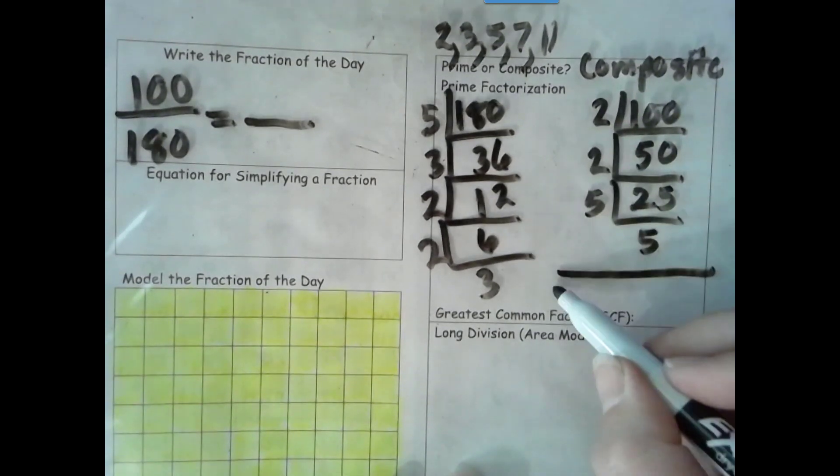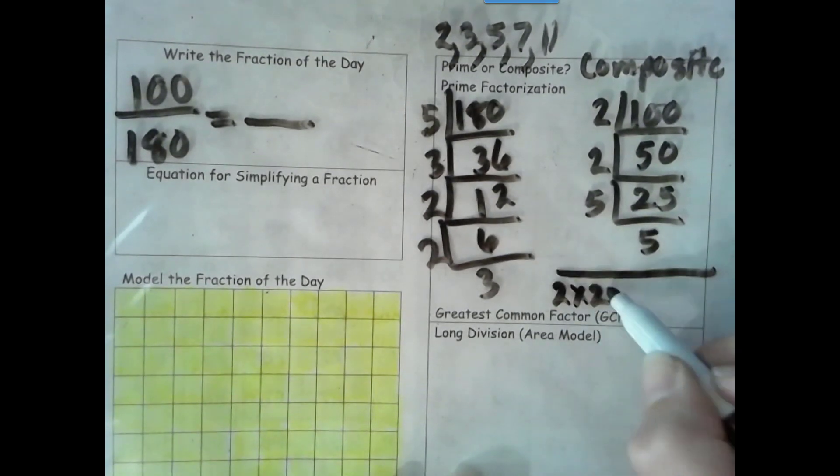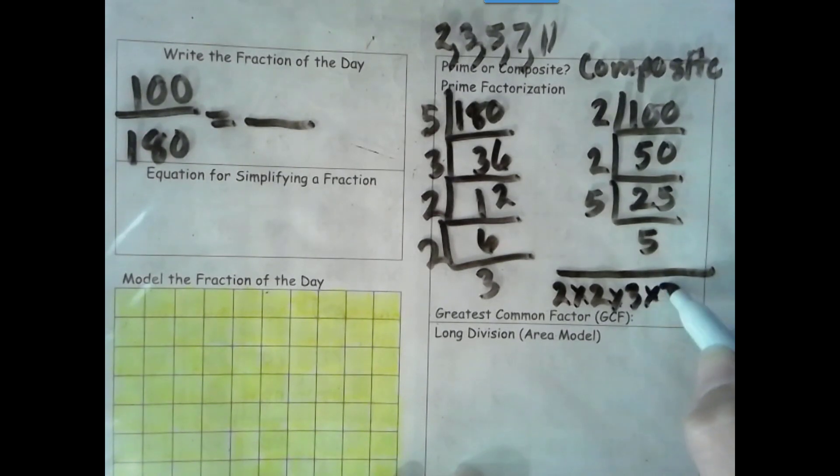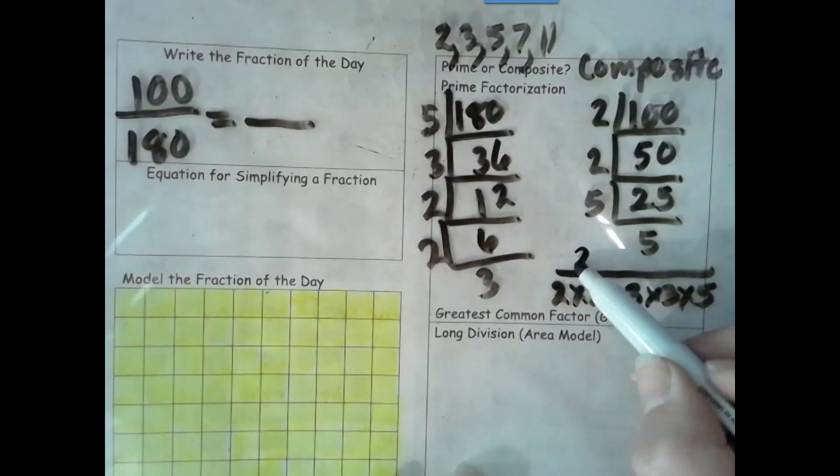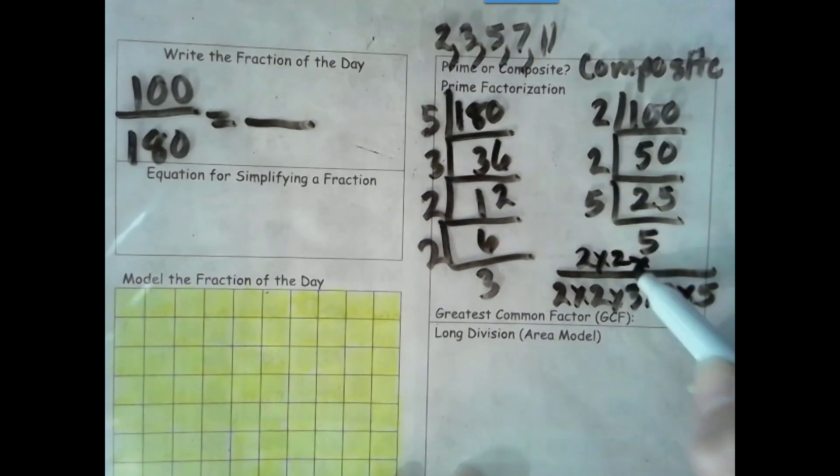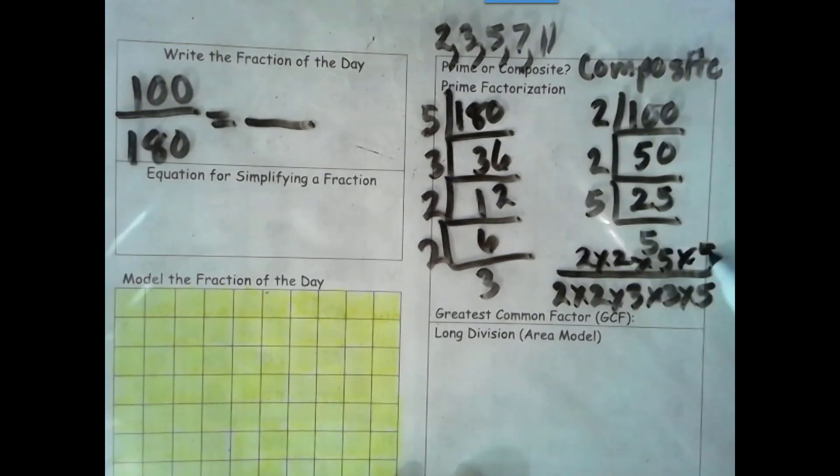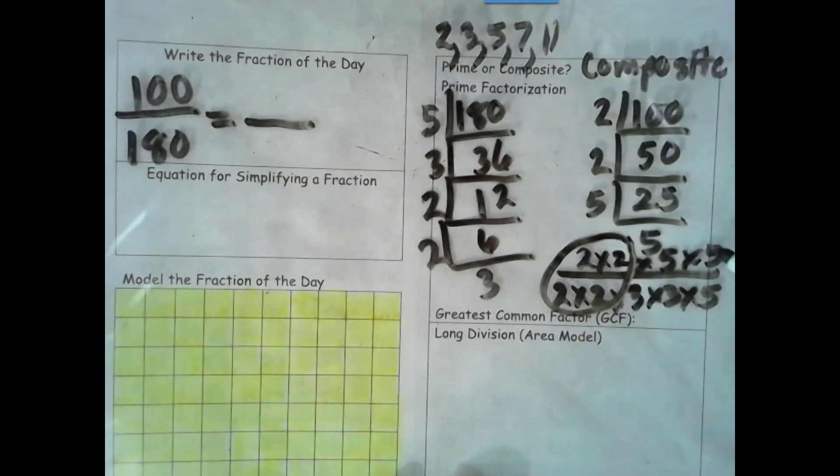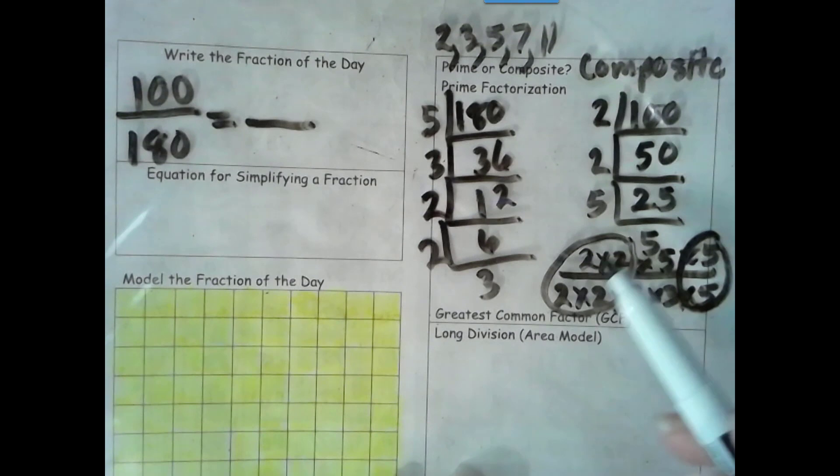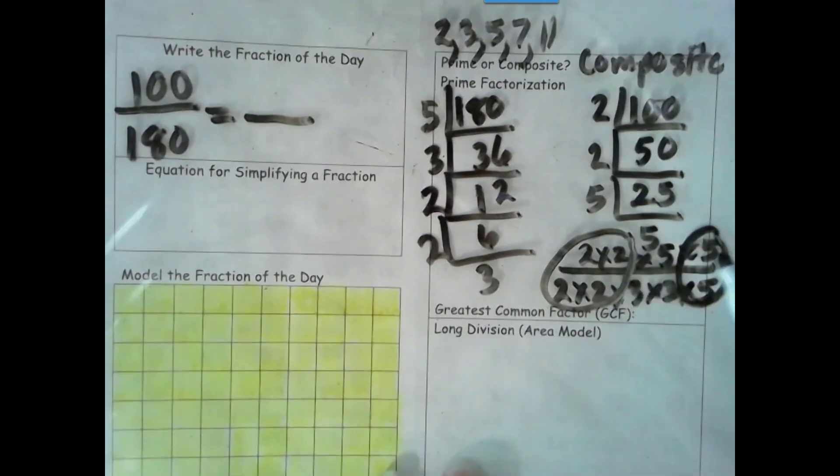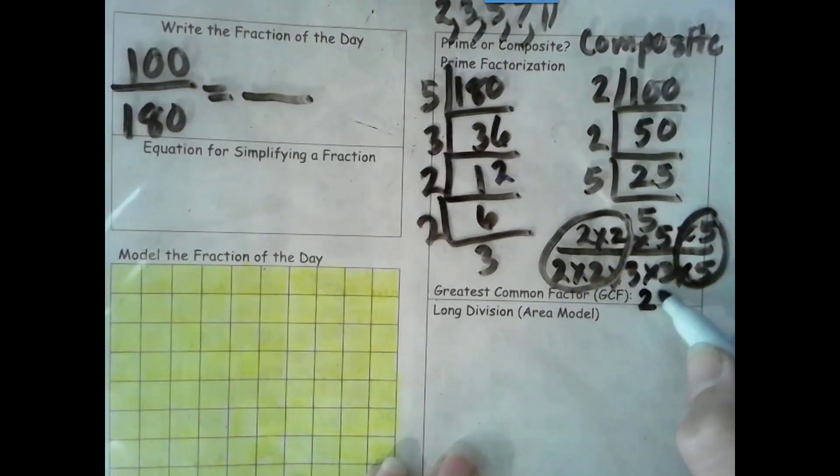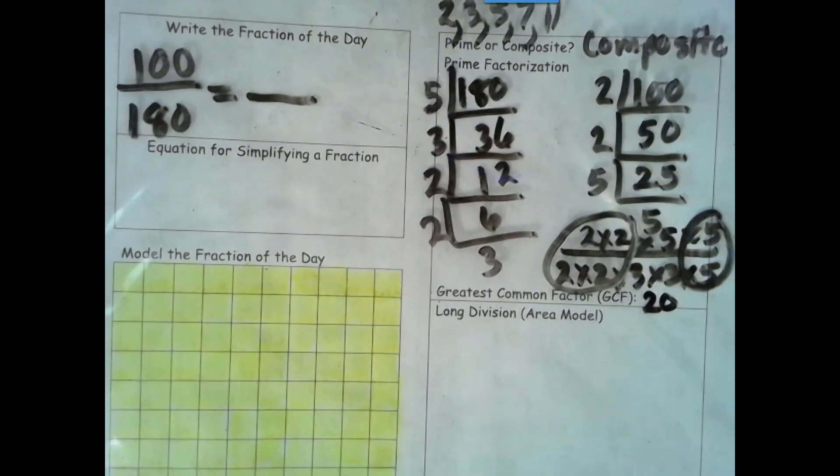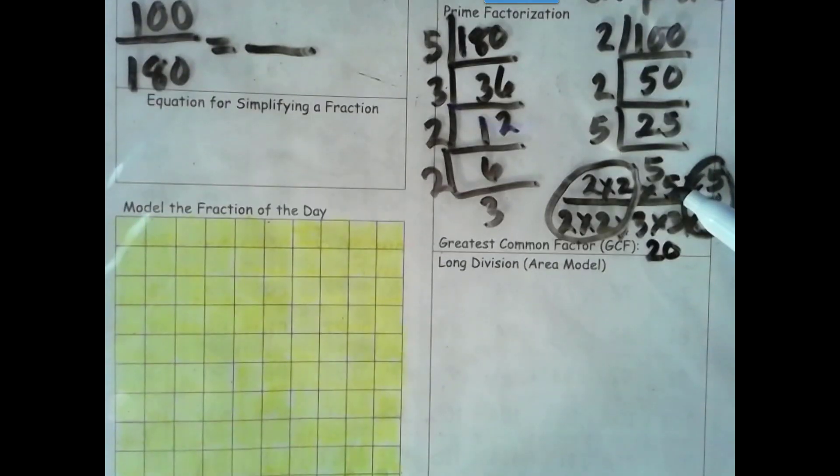Let's get down our prime factorization. 2 times 2 times 3 times 3 times 5. And here, 2 times 2 times 5 times 5. Let's see what we have in common. We have 2 times 2, and we have a 5. 2 times 2 is 4, times 5 is 20. So our greatest common factor is 20. Leaving a 5 in the numerator and 3 times 3, or 9 in the denominator.